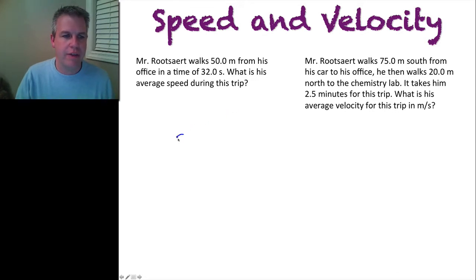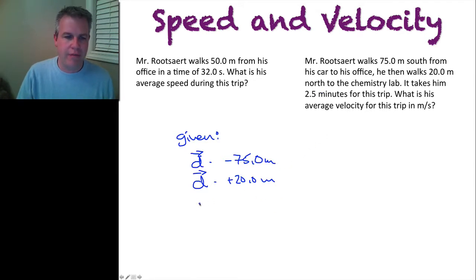So again, let's write down everything that we are given in this situation. So the first thing I know that I have a displacement of negative 75 meters. And I'm going to make south my negative direction. Then I also have a displacement, another displacement of positive 20.0 meters. Because north says that I moved north. And I know that my time is 2.5 minutes. Now the answer, it's asking me for the solution to this in seconds. So I'm going to convert that right away. So 2.5 minutes is 150 seconds.